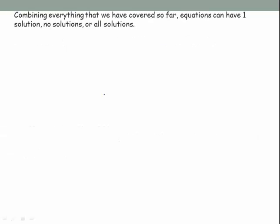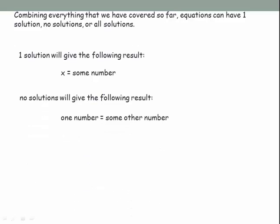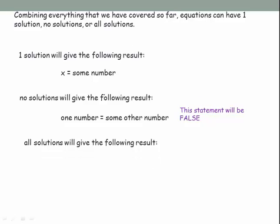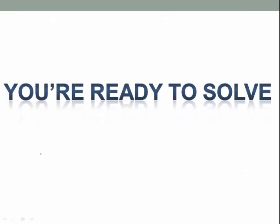So, an equation can have one solution, no solution, or all solutions. For one solution, you get x equals some number. For no solutions, you get one number equals a different number — a false statement. For all solutions, you get a number equals that same number — a true statement. You can use the empty set symbol for no solutions or the real numbers symbol for all solutions. Now you are ready to solve equations.